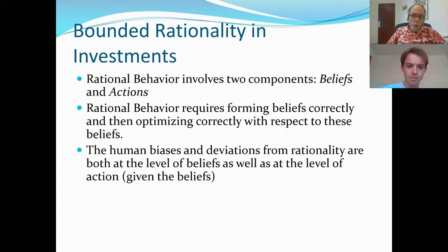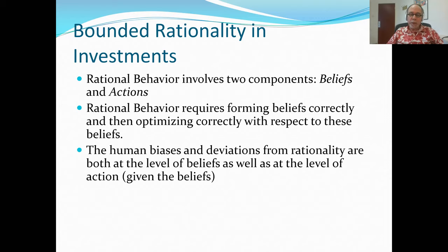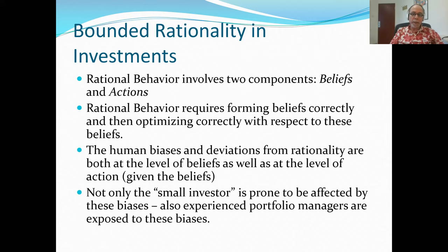Once we have beliefs, we use them to decide on an action that would maximize our objectives — usually referred to as the utility function. So human biases and deviations from rationality are both at the level of beliefs as well as at the level of action given beliefs.